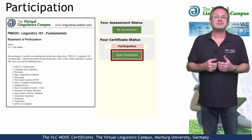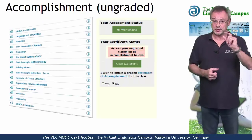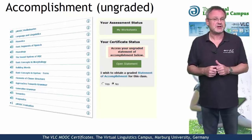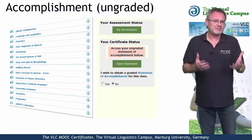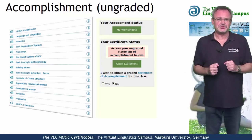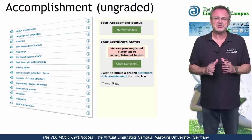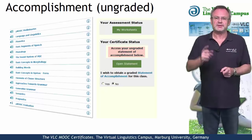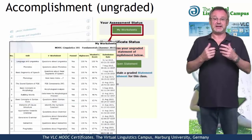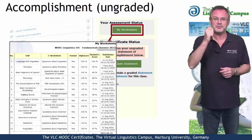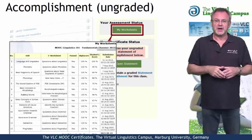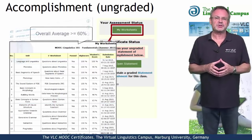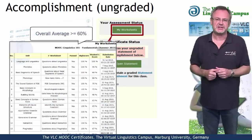The second option is the statement of accomplishment, also for free and issued by the Virtual Linguistics Campus. To be given such a certificate, we not only want your regular participation, but we also want you to do the mastery worksheets — our electronic tests, one for each unit — and we want you to achieve an overall score of at least 60%.